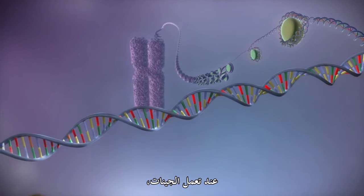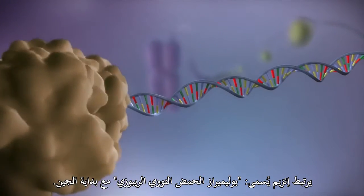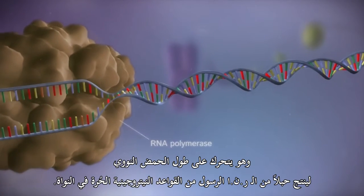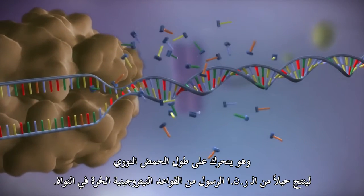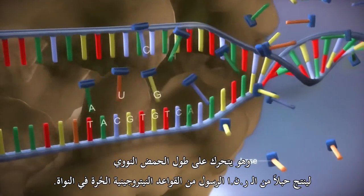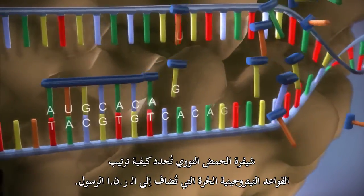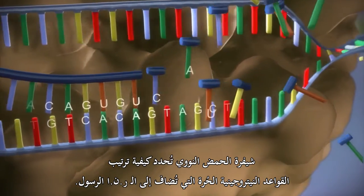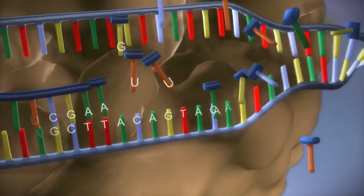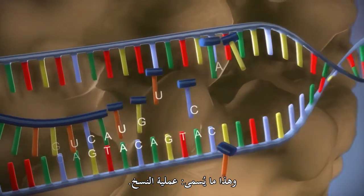When a gene is switched on, an enzyme called RNA polymerase attaches to the start of the gene. It moves along the DNA, making a strand of messenger RNA out of free bases in the nucleus. The DNA code determines the order in which the free bases are added to the messenger RNA. This process is called transcription.